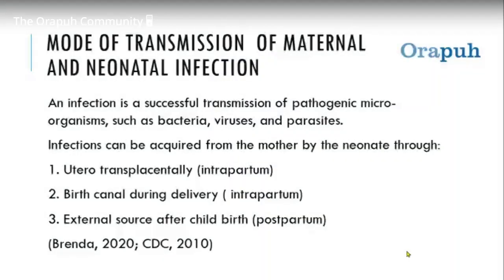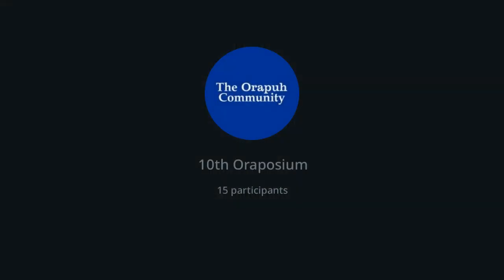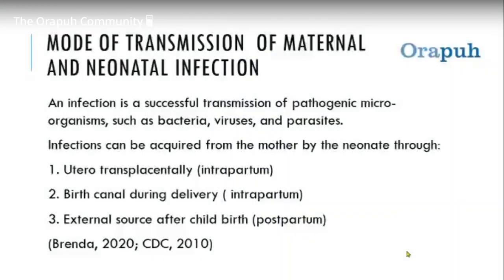Infection can be acquired from the mother by the neonate through the following routes. Number one: transplacentally. When a baby is in the womb, the connection the child has with the mother is through the placenta — through which the baby feeds, defecates, and receives oxygen. In the same way, the child can also contract any infection the mother already has. So through the placenta, a mother can infect a child.